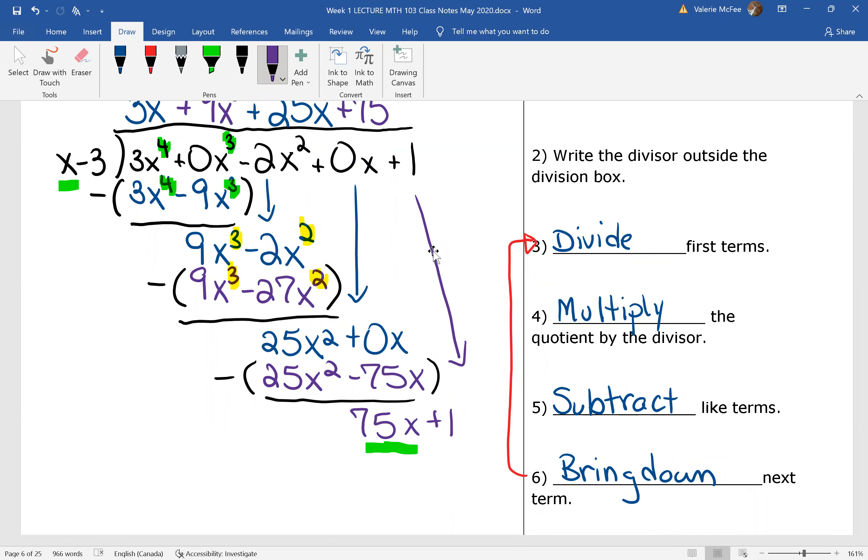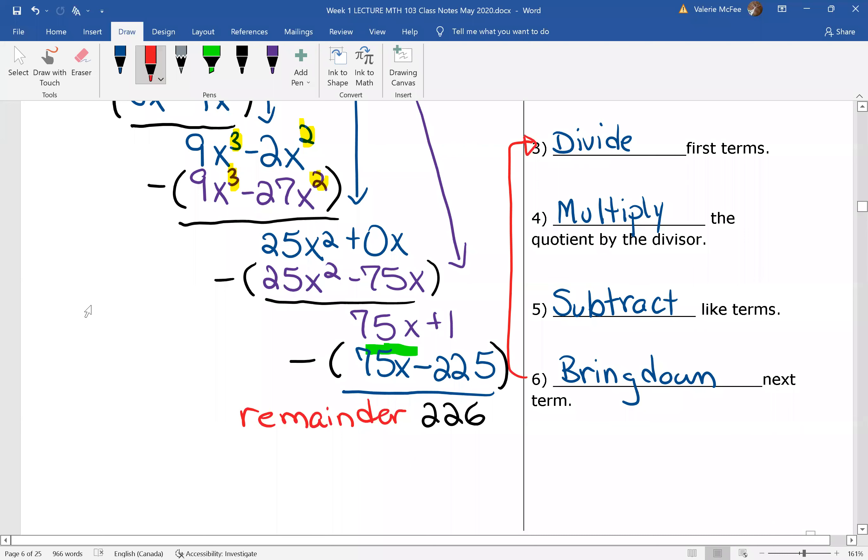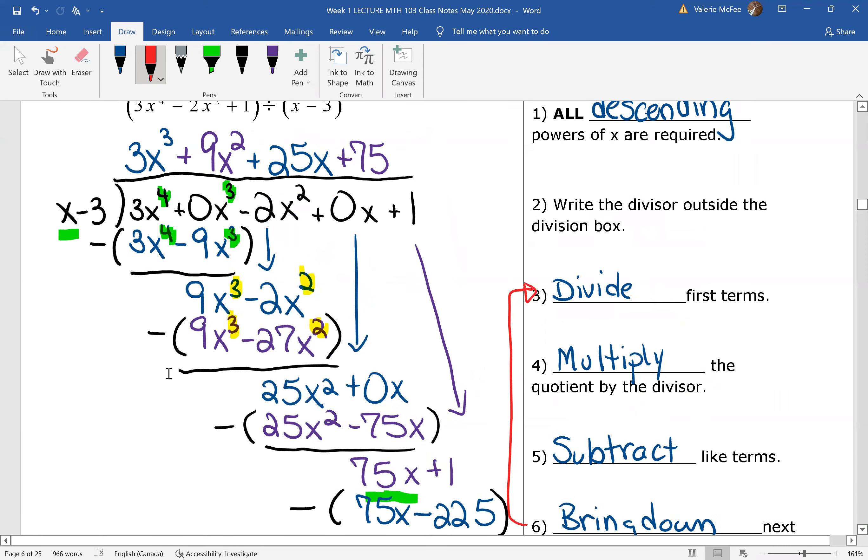Why don't you find out the remainder? Did you get a remainder of 226 and a quotient of 3x cubed plus 9x squared plus 25x plus 75?